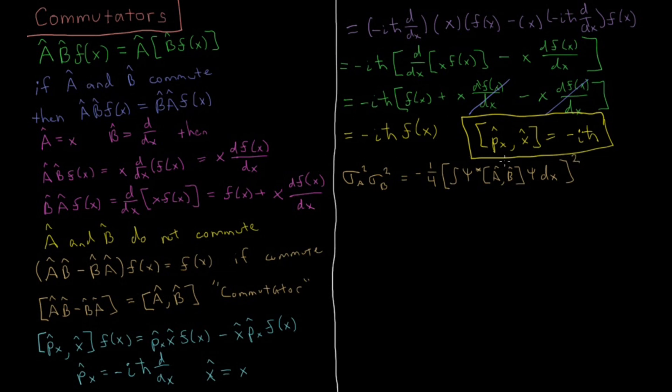If we quickly plug in the commutator of p and x here, we'll see that sigma squared p sigma x squared equals minus one-fourth psi star minus i h-bar psi. This i h-bar is just a constant, so we can pull it out of the rest of the integral. So we get minus one-fourth minus i h-bar, and then integral psi star psi dx squared. Psi star psi dx, the integral over the entire range of the function, is the normalization condition.